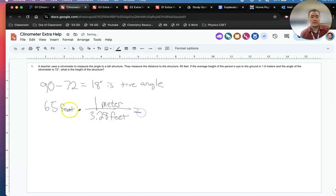So feet will cancel out. And what's left over will be 65 times 1 over 3.28. Same thing as 65 divided by 3.28.